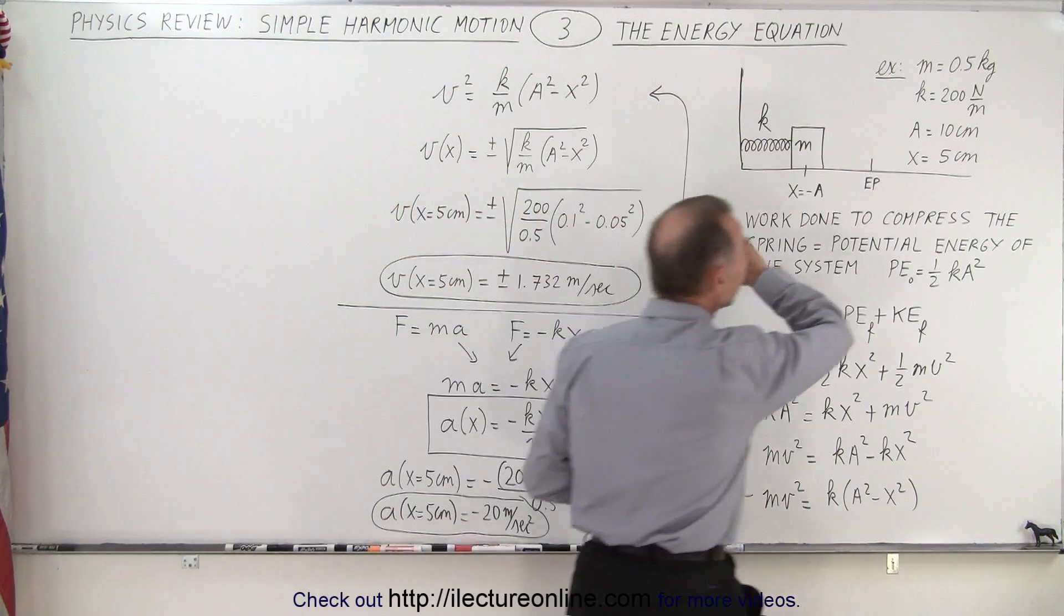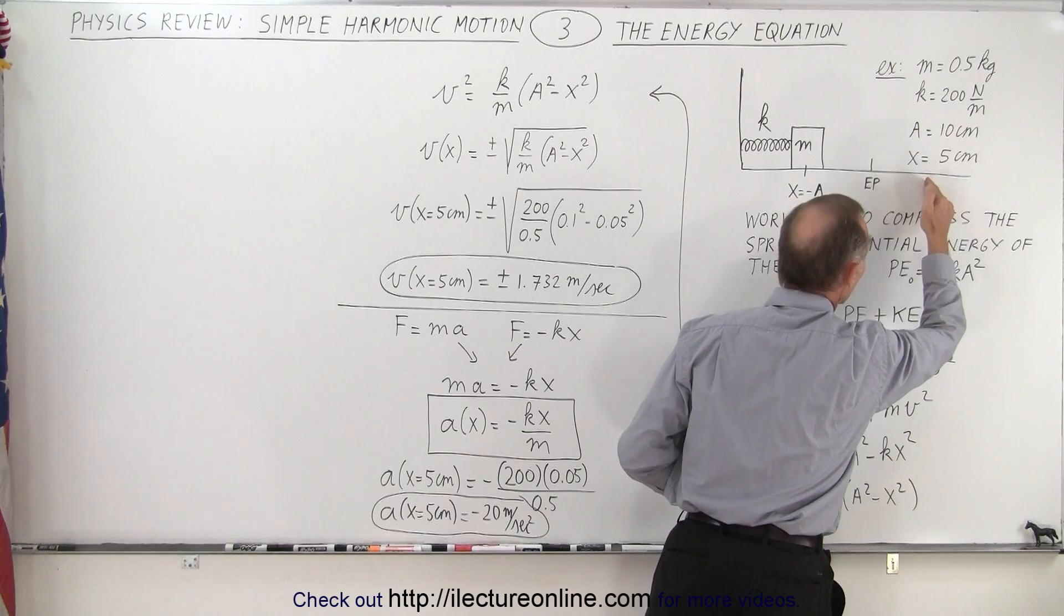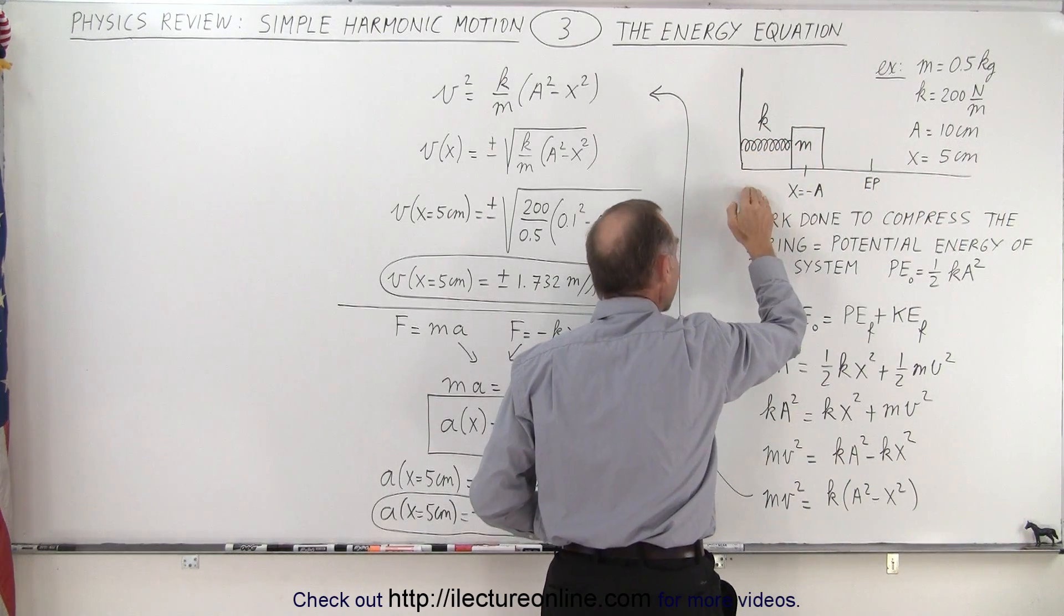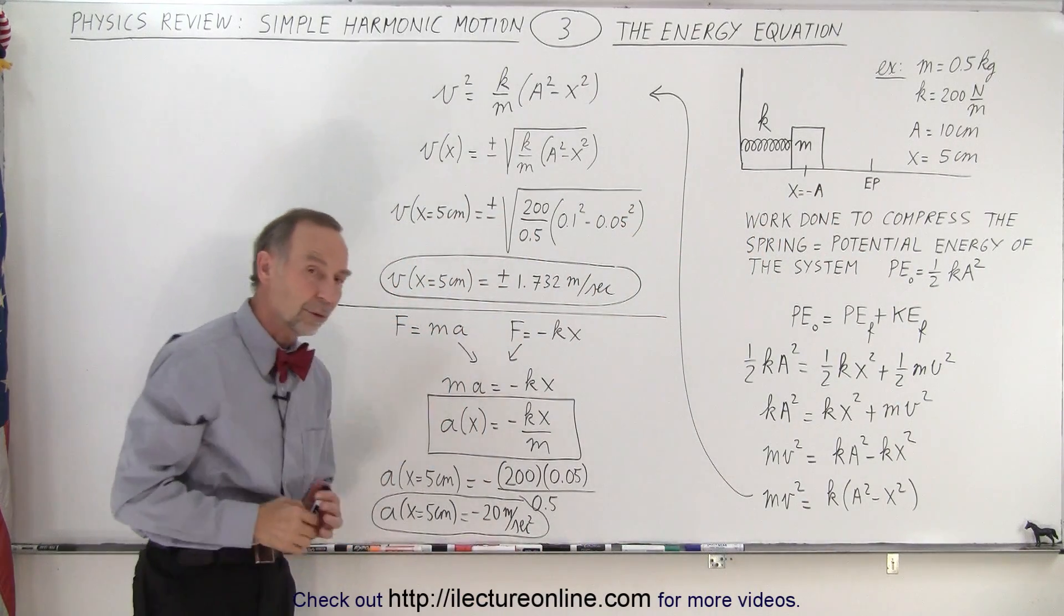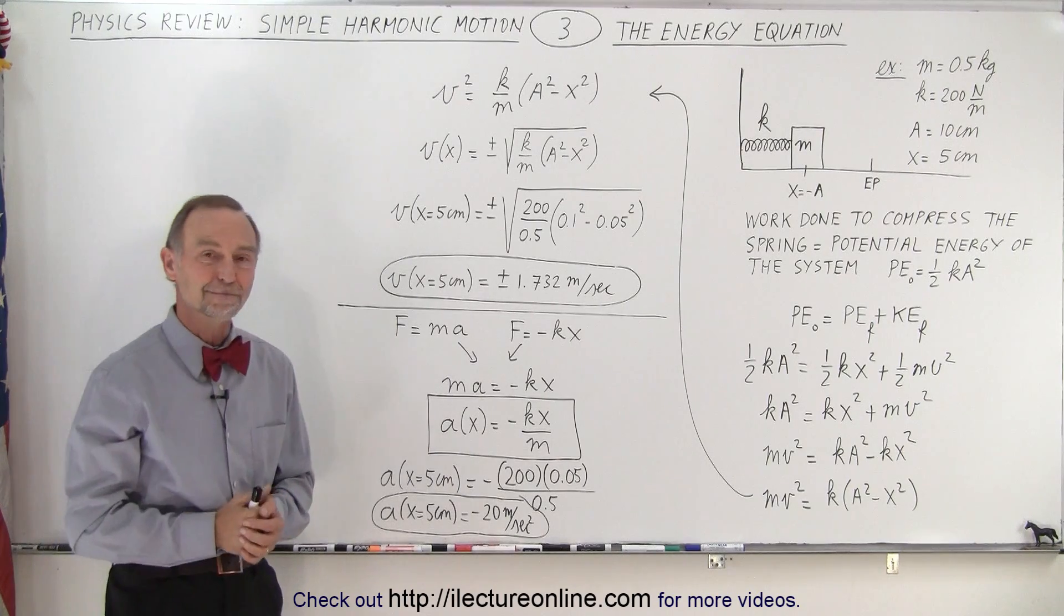The direction there is for sure. It doesn't matter if the object is moving to the right or moving to the left. If it's to the right of the equilibrium point, the acceleration will always be to the left. If it's to the left of the equilibrium point, the acceleration will always be to the right, and that's how we know for sure what the sign is for the acceleration, and that is how it's done.